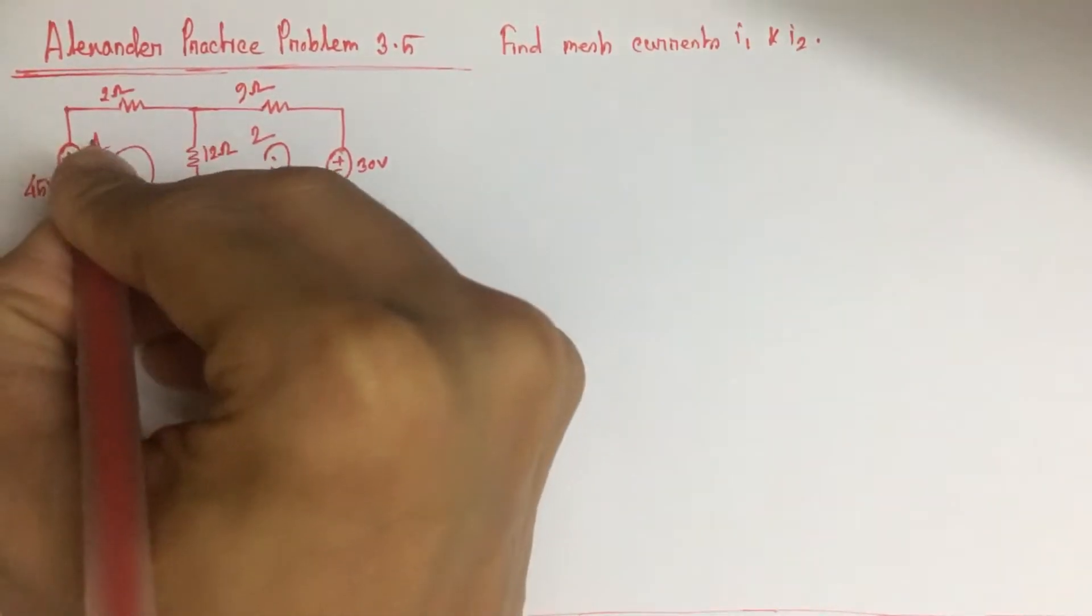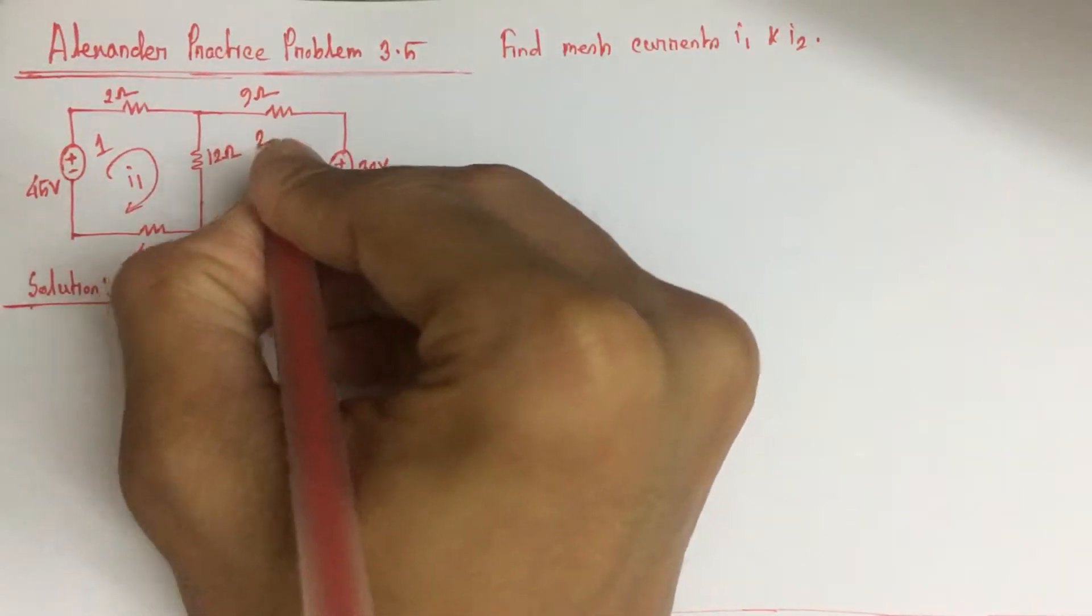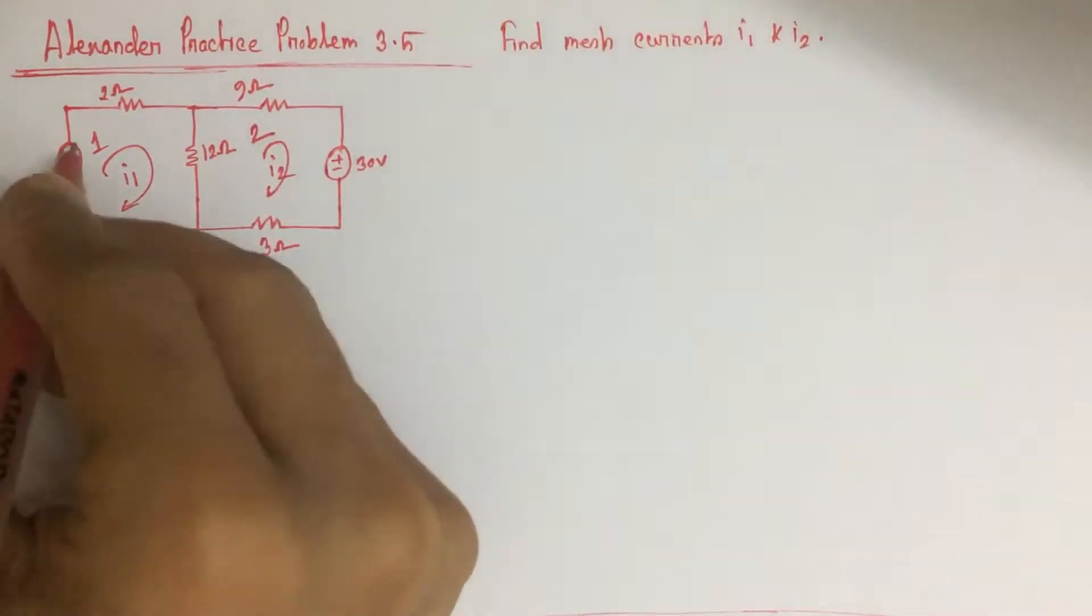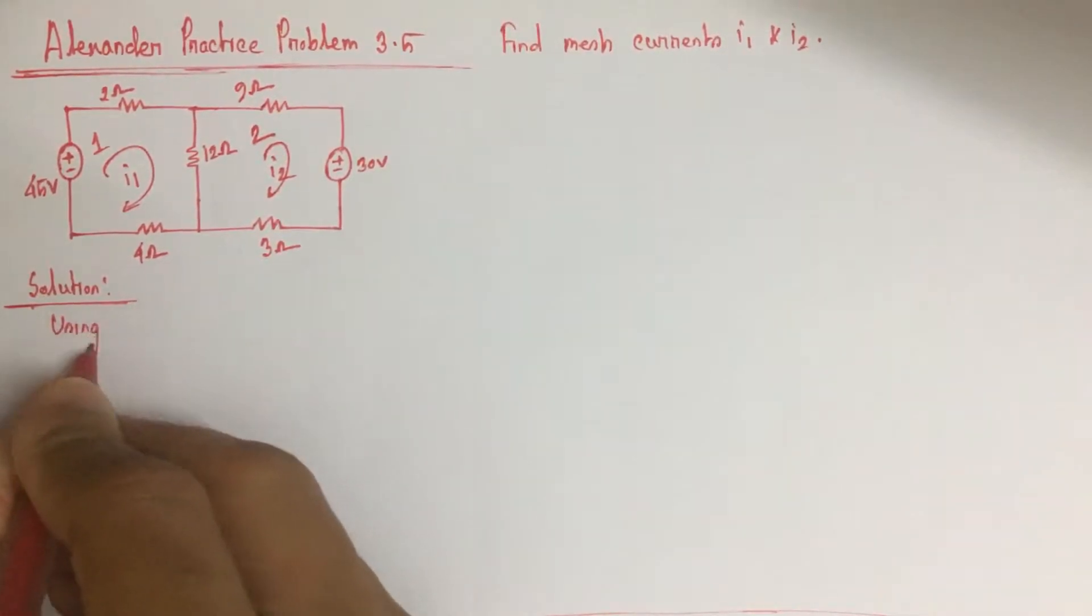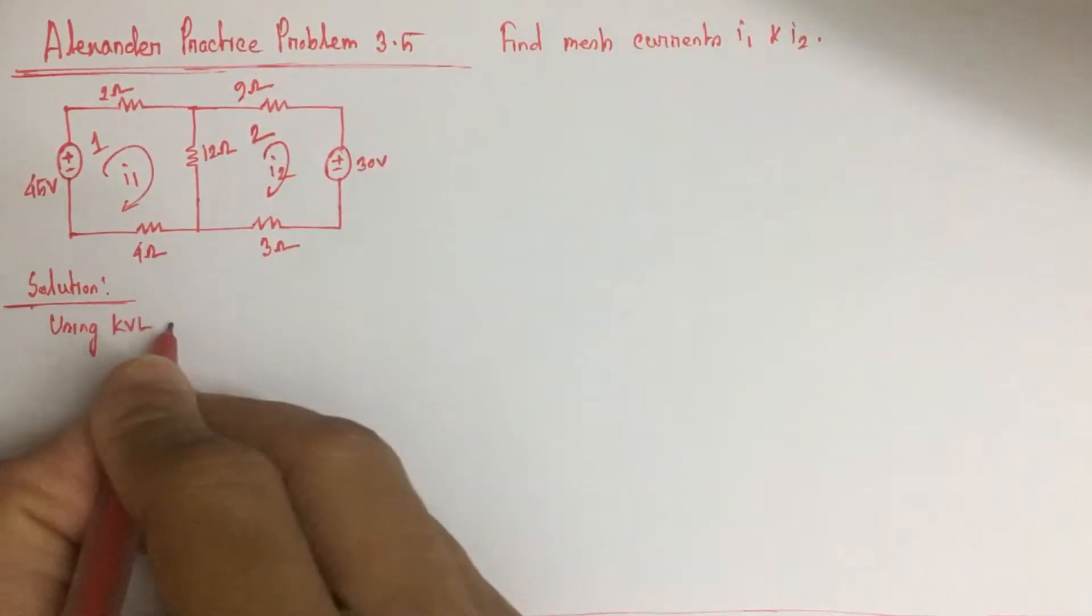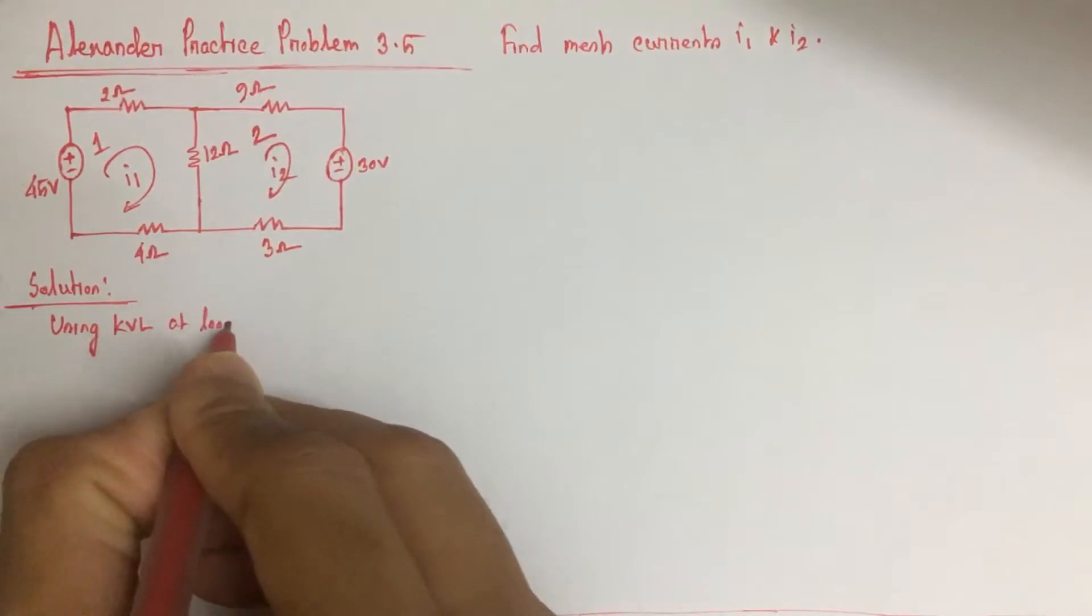Let this mesh be mesh 1 and this mesh be mesh 2. So using Kirchhoff's voltage law throughout mesh 1, using KVL at loop 1,